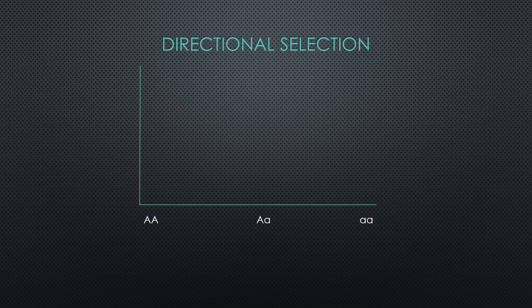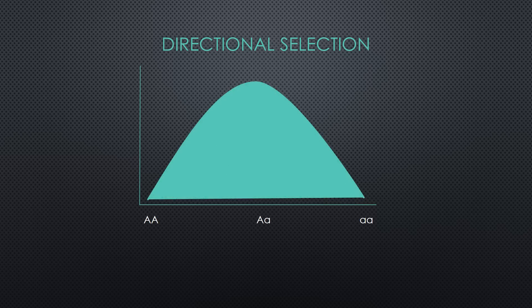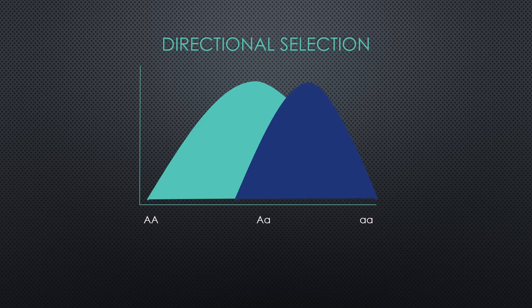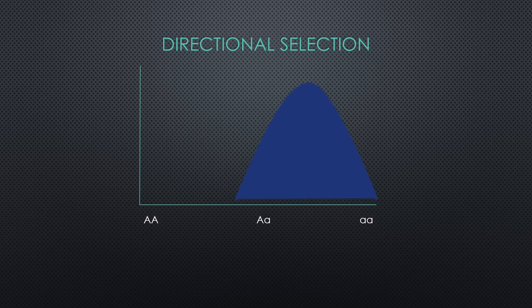Let's first look at our original population. This population is average and most individuals are heterozygous or big A little a, but in directional selection one of the homozygous genotypes is selected for. If little a little a is selected for, there are now more little a little a than big A little a or big A big A individuals, and more little a little a alleles.